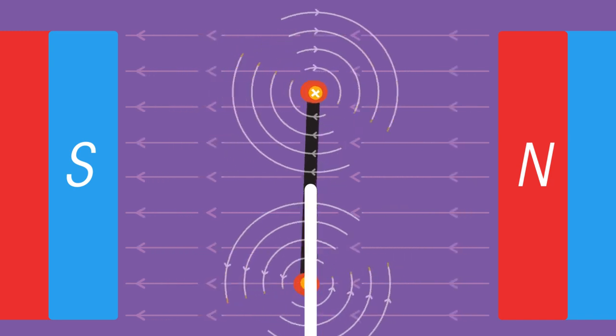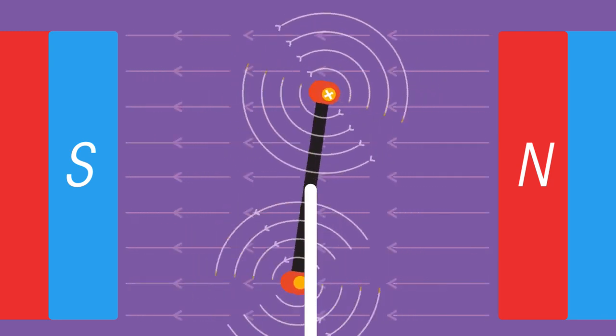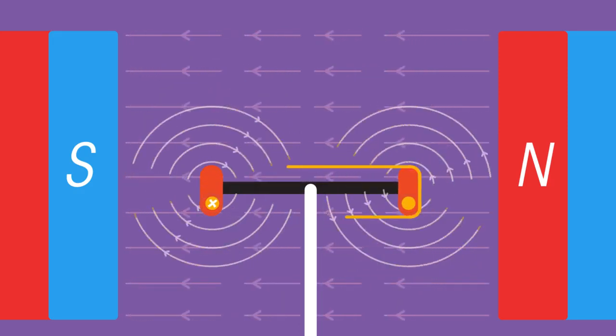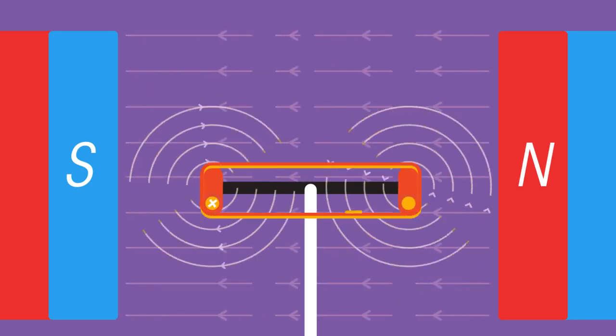And here you have an electric motor. Looping the wire around many times will increase the turning force on the motor.